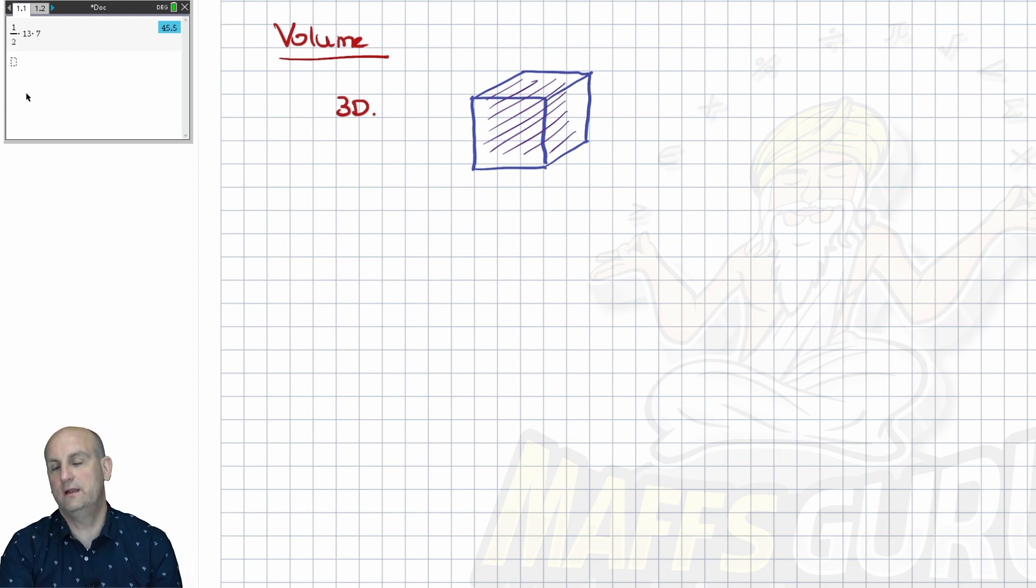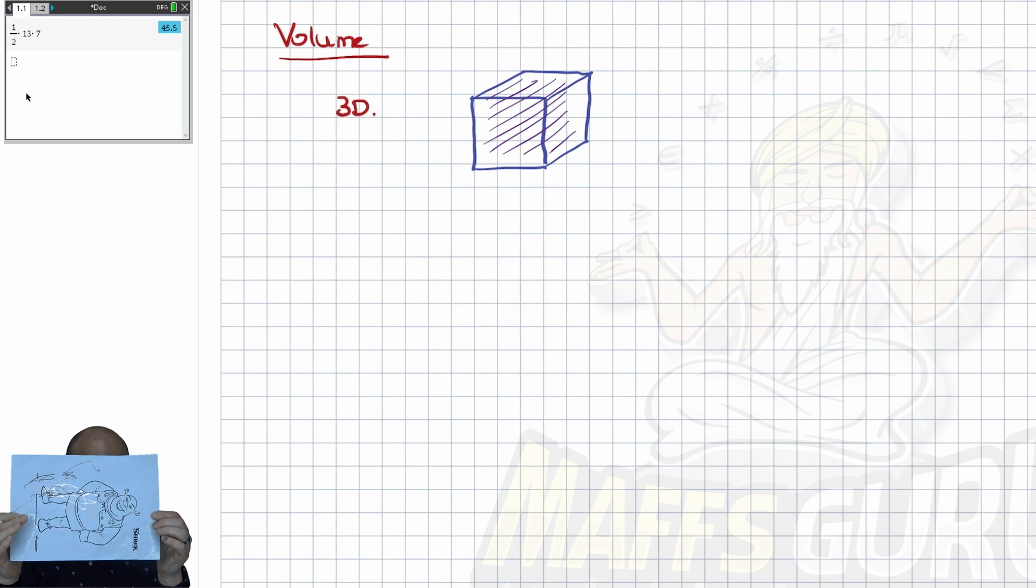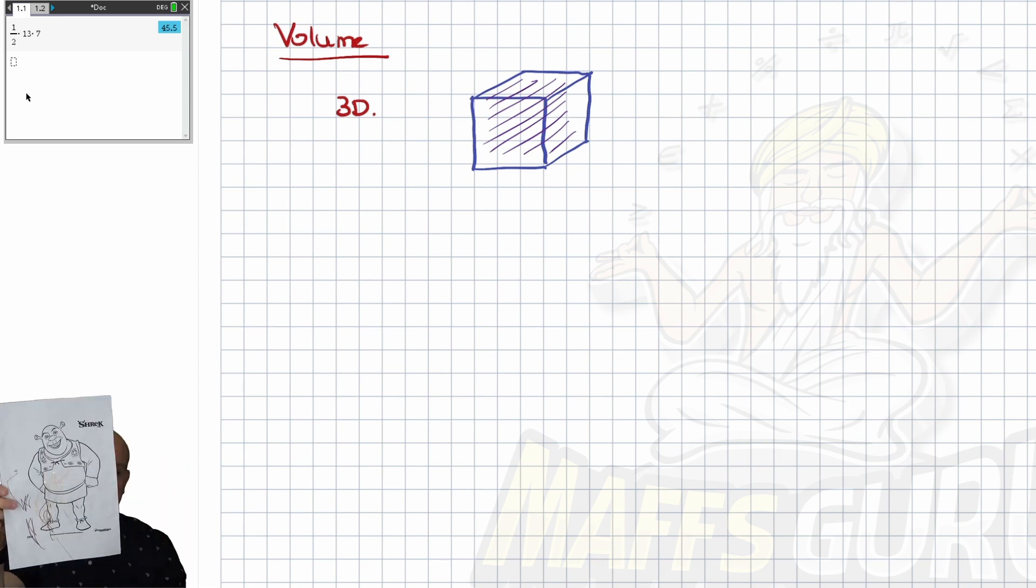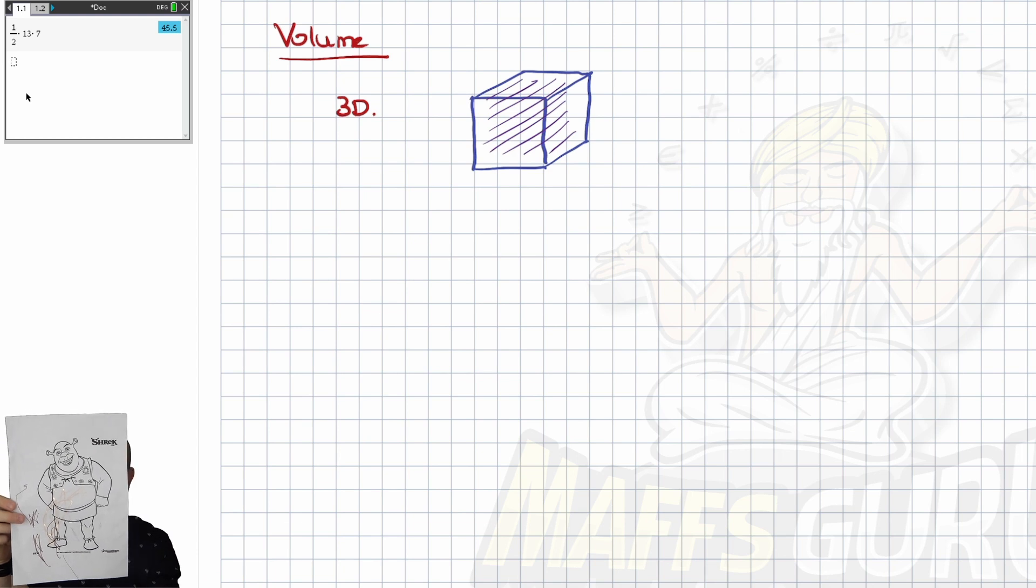So the volume is how much stuff I can fit inside there. It could be sand, it could be mud. So we are looking for how much stuff can fit in there. Now, how do we do that? Well, we need a formula. When we have three-dimensional shapes, we normally say things like length times width times height. But what is this? Is this the width? Is it the height? Because as soon as I change that shape around, the values change.